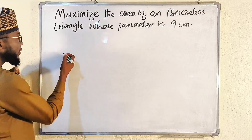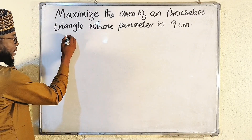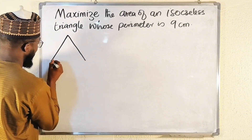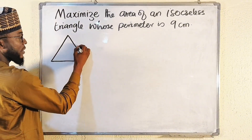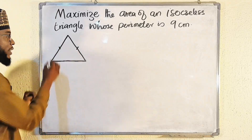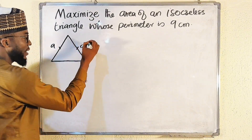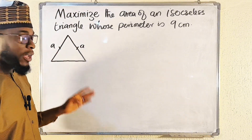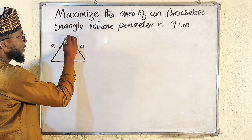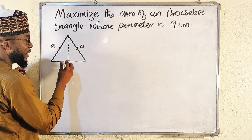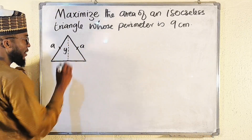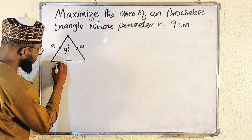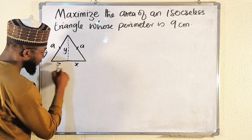First, I would like to sketch this isosceles triangle. Remember the opposite sides are equal in length. Let me call the equal sides 'a'. To find the area of a triangle we need the base and the height — let's call the height 'y'. This vertical line divides the base into two equal parts, each called x, so the full base is 2x.